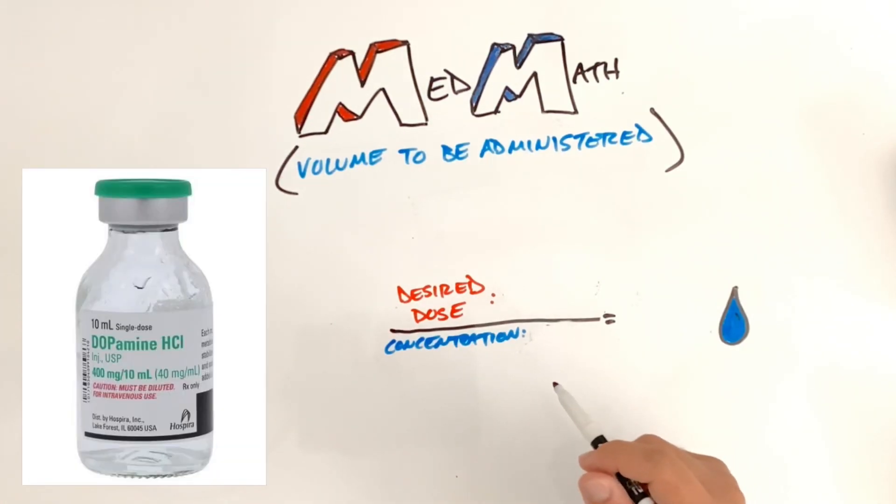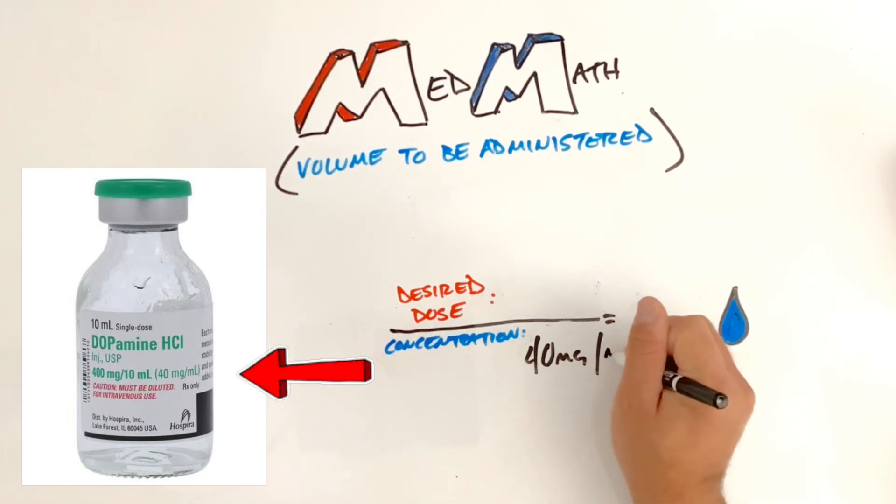So let's take our dopamine here. Let's talk about the volume. The total volume is 10 mLs. We know the total weight suspended in that volume is 400 milligrams. We do 400 divided by our 10 mLs, and it's going to give us our concentration, which is 40 milligrams per mL.